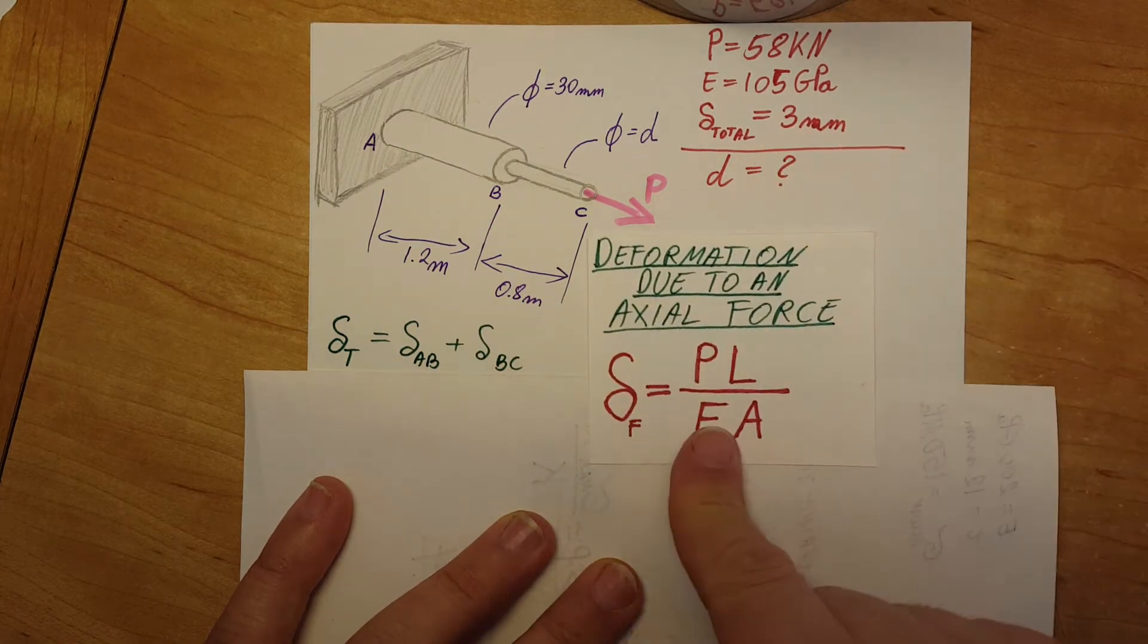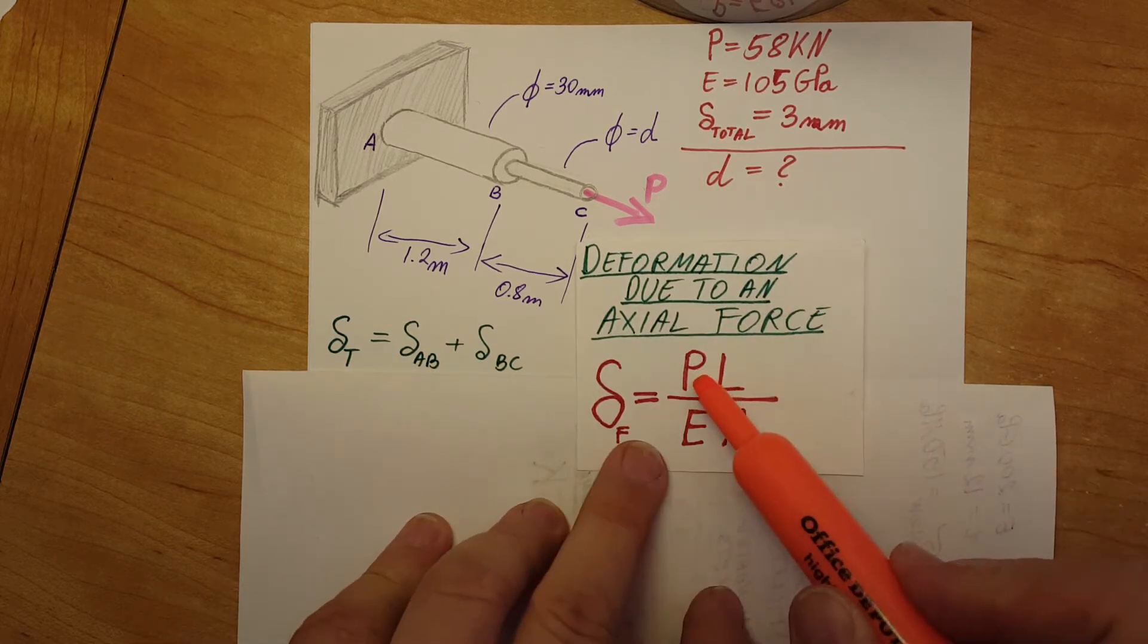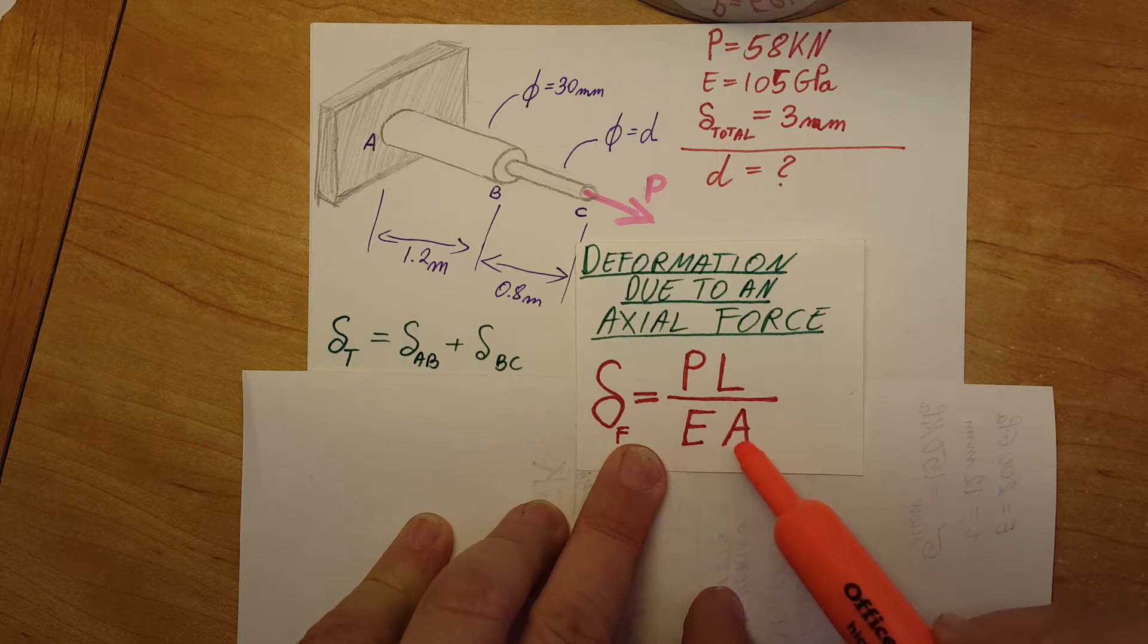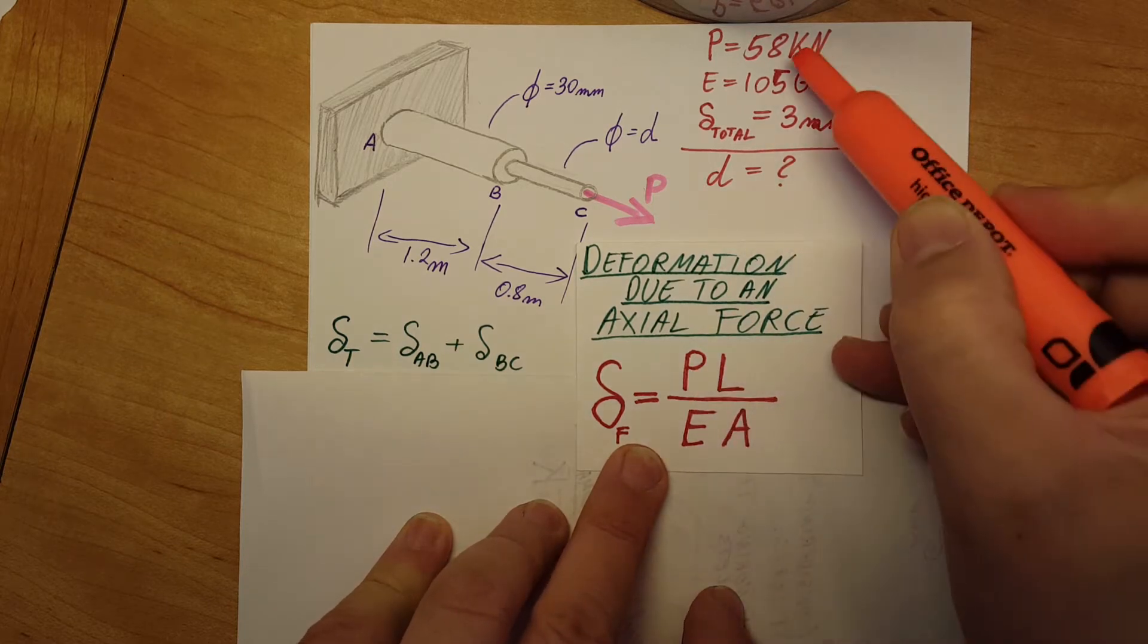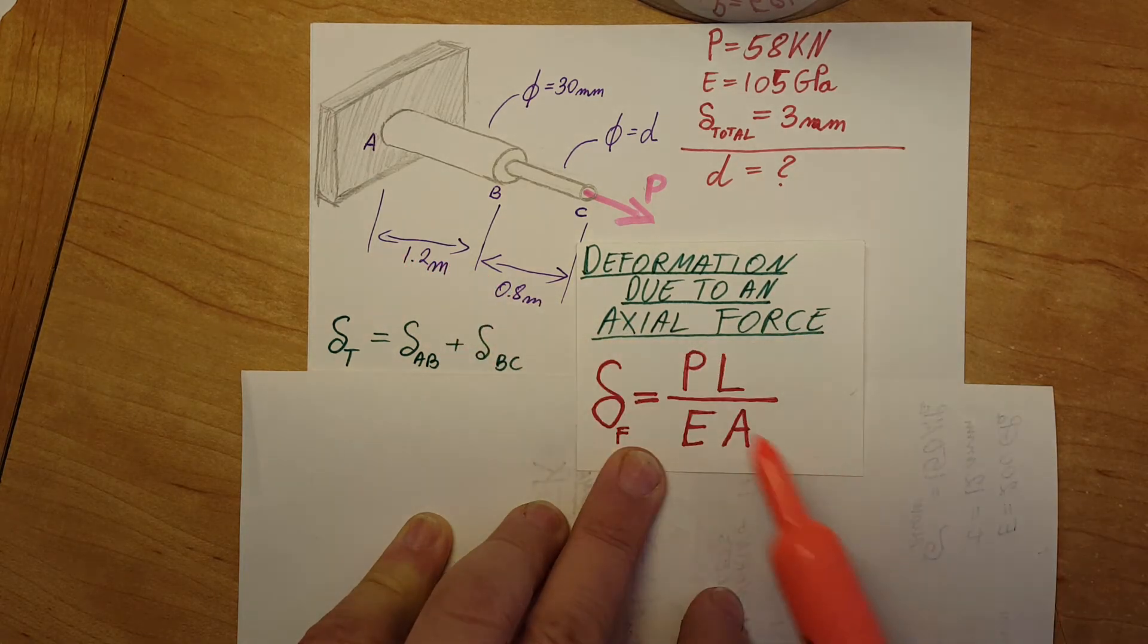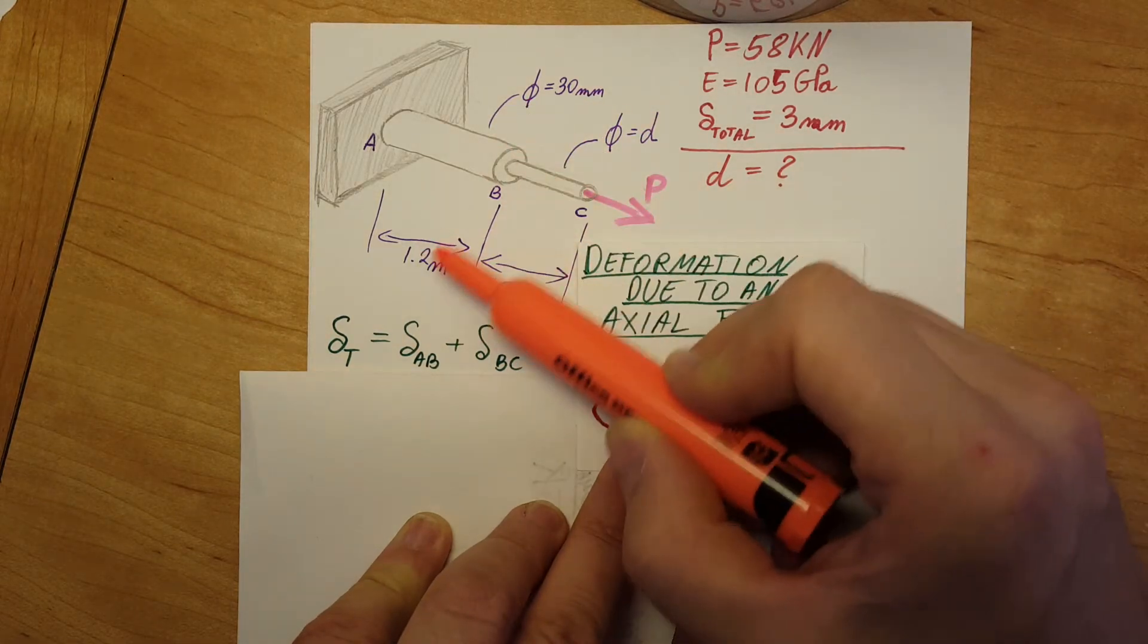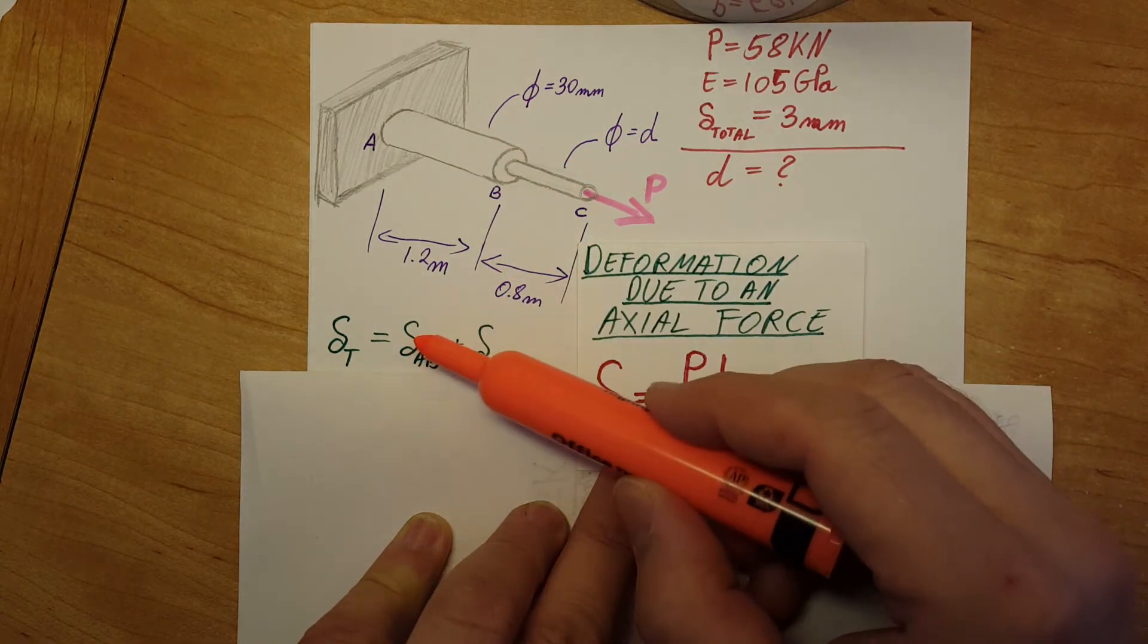We would plug in this formula right here. So let's see what we have: P, L, E, and A. The P is given so we know it. The length we know is 1.2 meters. E is given and the area we can calculate because the diameter is given. It's a circle, so therefore this whole part is nothing more but a fancy looking constant, it's just another number.